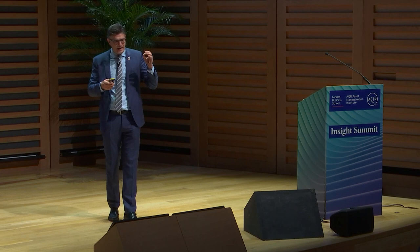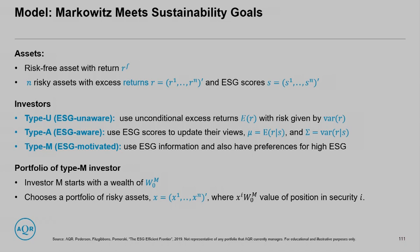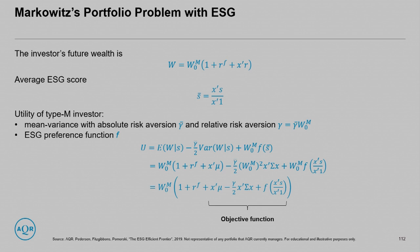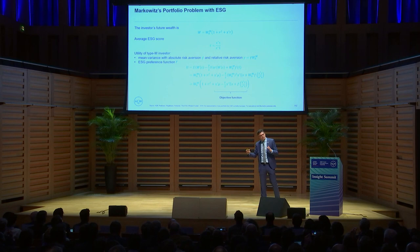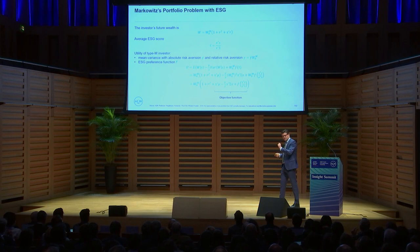They have some wealth and choose their portfolio x of shares of the risky assets. The typical Markowitz problem, for which he won the Nobel Prize, says that investors should maximize expected return minus a penalty for risk. What's new here is we add plus some increasing function f — it can be any increasing function — of the average ESG score. So x-prime s is the total ESG score, and dividing by the sum of the weights gives the average ESG score.